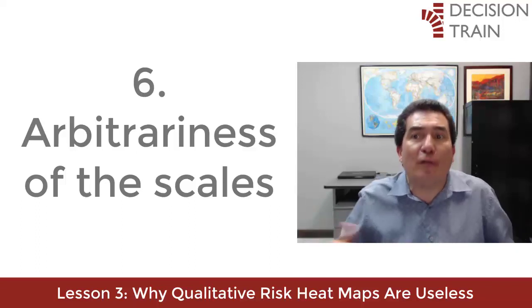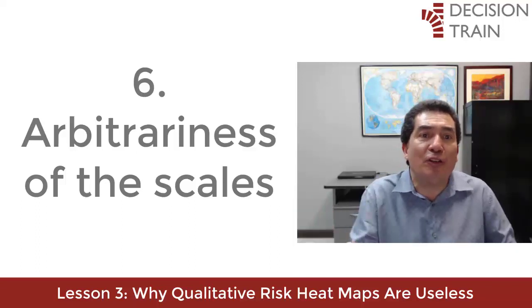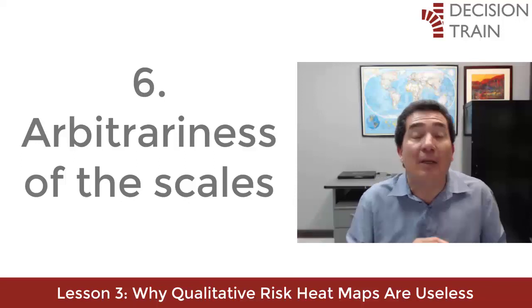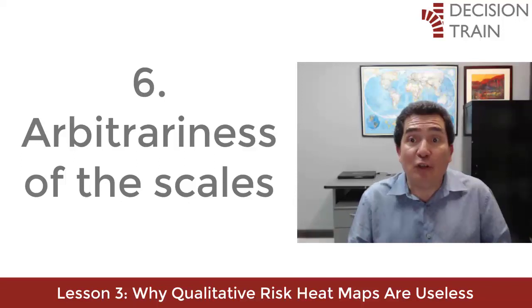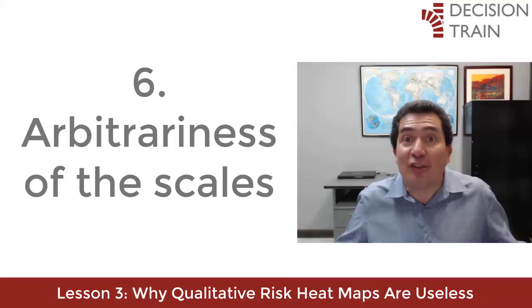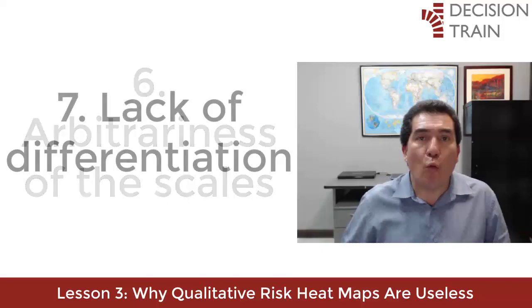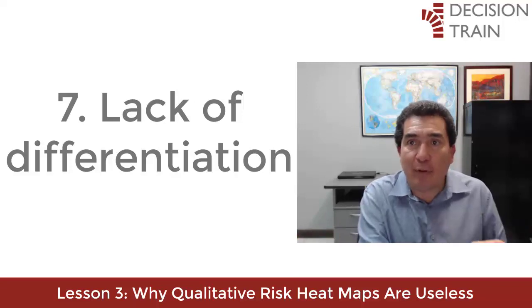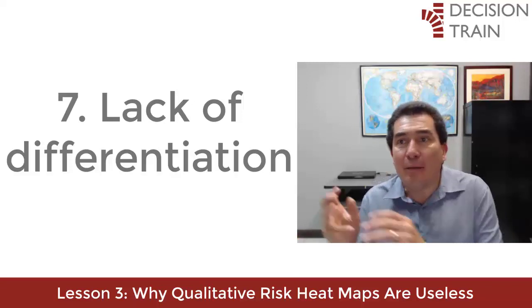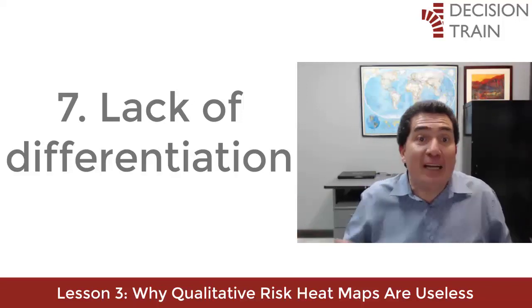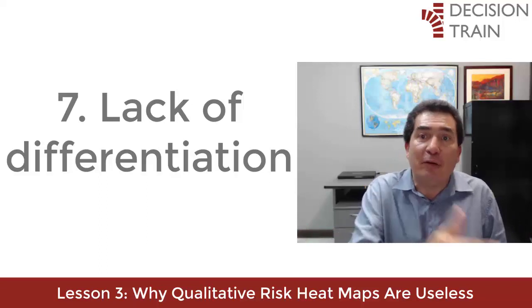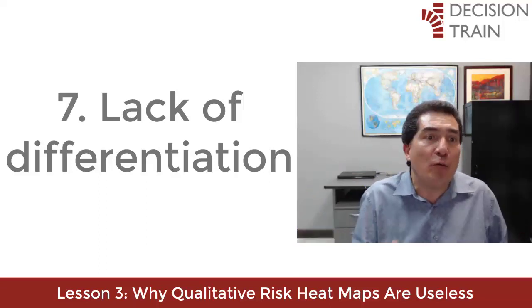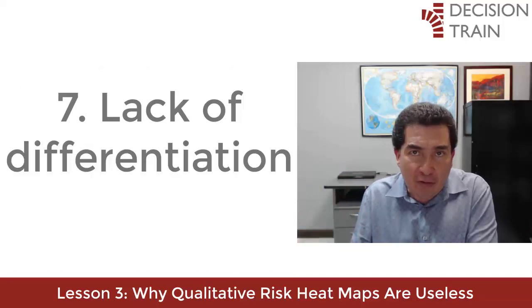There's no shortage of research on how our choices in scale design impact the outcome. In contrast, quantitative risk management does not use scales. Once multiple risks fall into the same category — for example, high probability and medium impact — there is no further way to differentiate between the severity of those risks, and no way to determine which risks should be treated first.